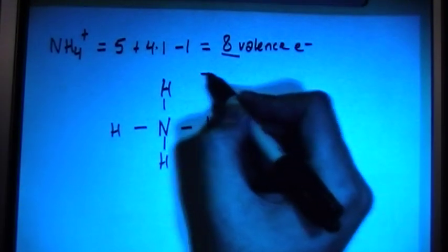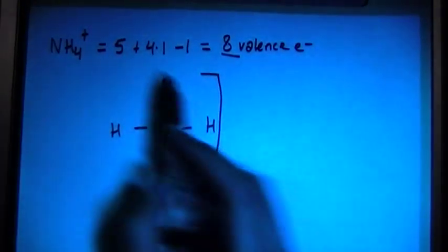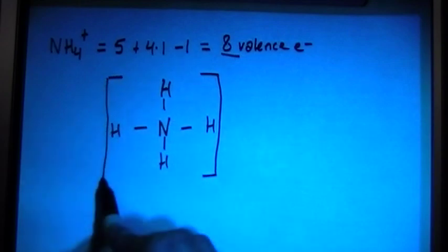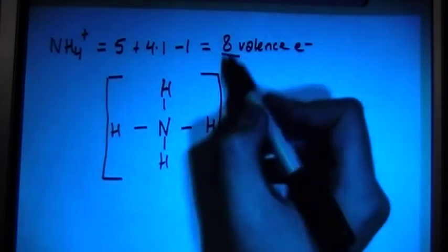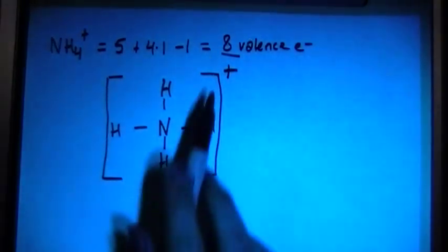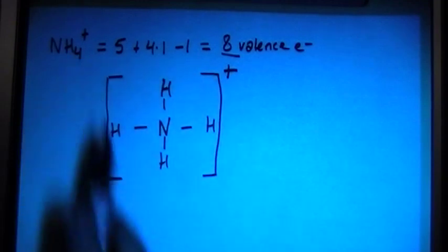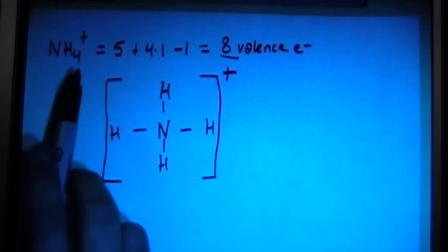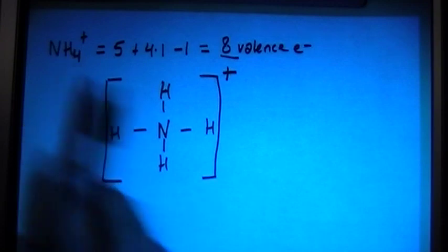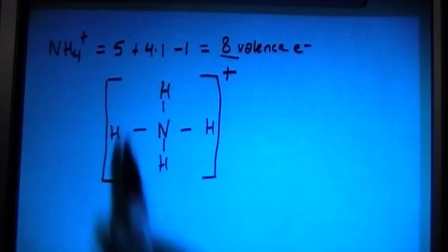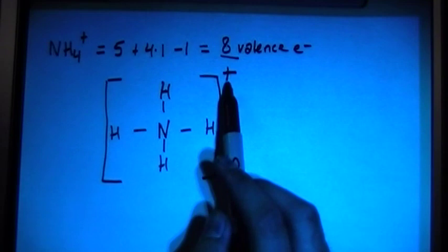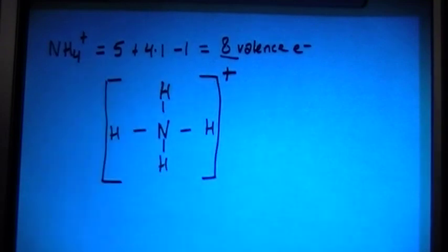However, we are forgetting one thing. When you have ions, you have to put a square bracket around the Lewis structure and then indicate what the charge is on the ion. So in this case, since ammonium is a plus 1 charge, you need to have a square bracket around the structure drawing and then put a plus there to indicate the plus 1 charge.